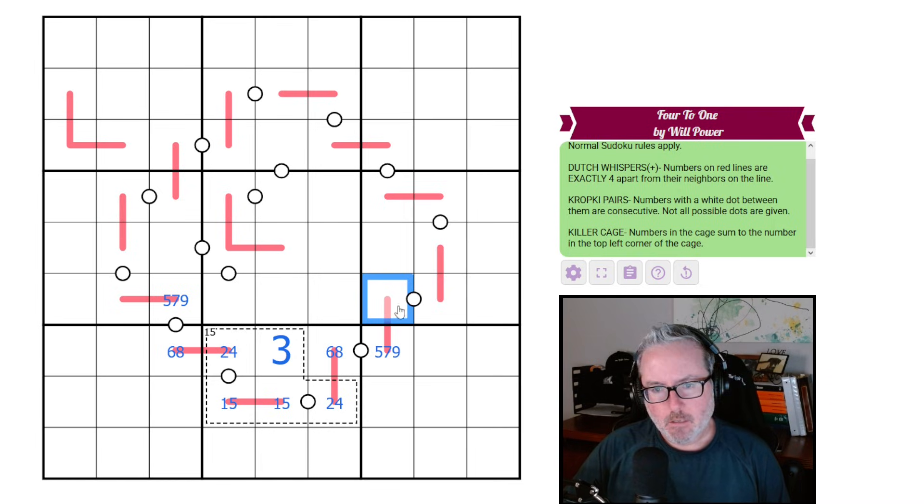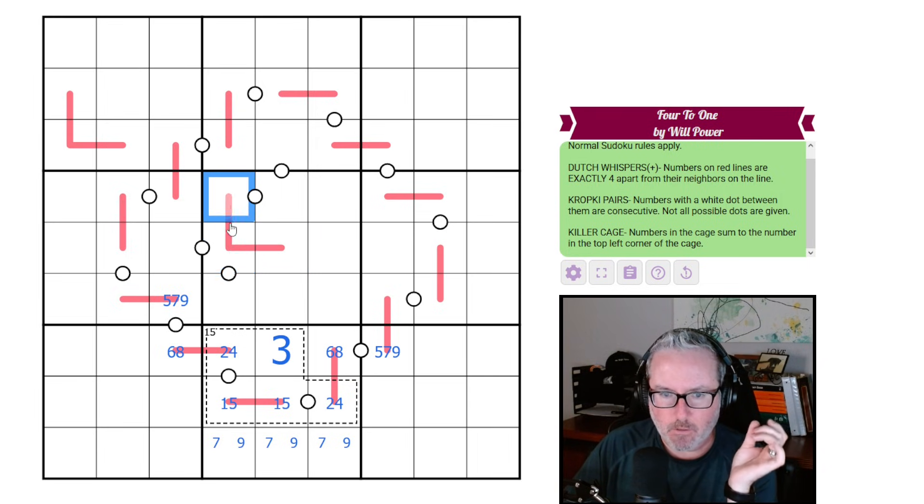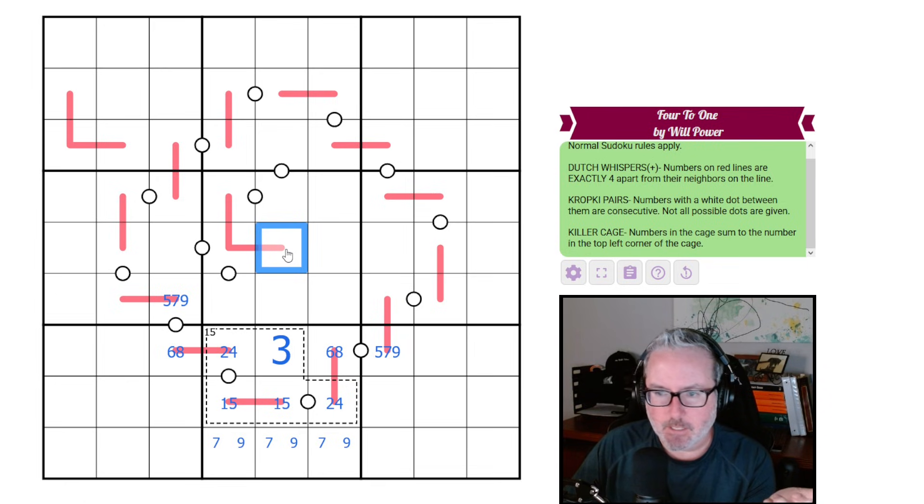I didn't really notice this L-shape Dutch Whisper plus grouping. Does that tell us this has to be a 1, 5, 9? Yeah, it does. Because how else would you ever make this work? Usually in Dutch Whispers, if you have a triangle setup, that forces the 1, 5, 9. But in this instance, because they have to exactly be 4 apart, there's no other way to work this. So if you put a 2 in here, you can put a 6, but then where do you go from there? This is a 1, 5, 9.